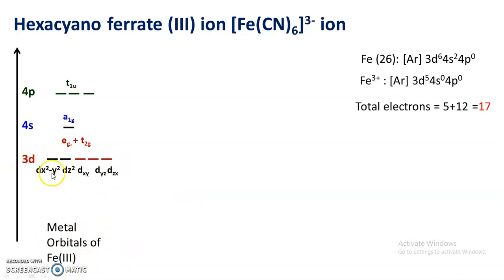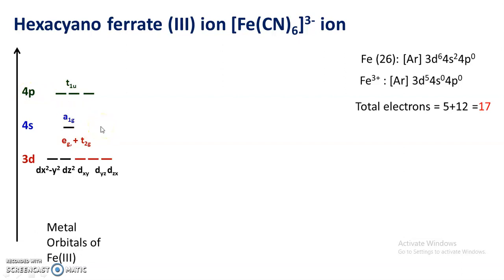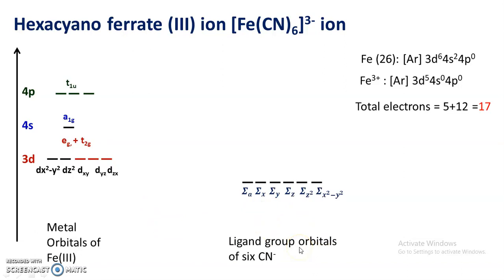There are 5 3d orbitals: dx²-y², dz², dxy, dyz, and dzx — a degenerate set. The dx²-y² and dz² orbitals are the eg orbitals, while dxy, dyz, and dzx are the t2g orbitals. There is also a 4s orbital with symmetry symbol a1g, and three 4p orbitals (px, py, pz) collectively called t1u. To the right side, the 6 ligand group orbitals are shown: Σa, Σx, Σy, Σz, Σz², and Σx²-y².